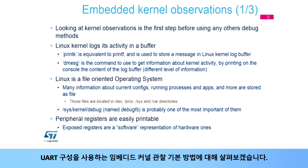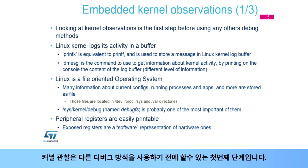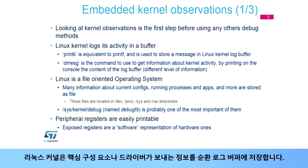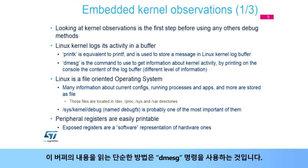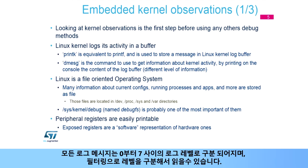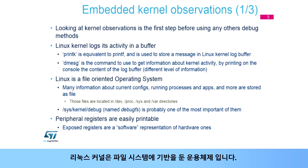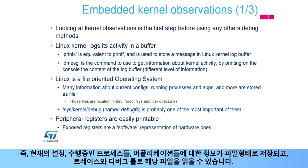Now let's look at basic embedded kernel observations, illustrated by an example around UART configuration. Kernel observation is the first step before using any other debug method. The Linux kernel uses a circular log buffer to store information coming from core components or drivers. PrintK is a basic function used to store messages in this buffer. The simple way to read the content of this buffer is to use the dmesg command. All log messages are classified in different log levels, from 0 to 7, enabling filtering of those messages when reading them.